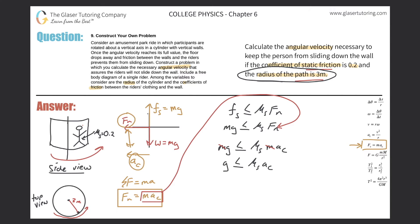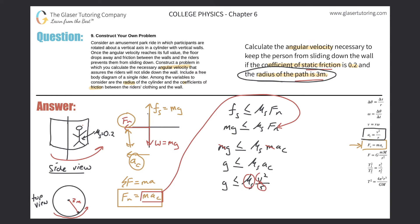I know the relationship: centripetal acceleration equals v²/r, where r is the radius. So now I substitute v²/r for the centripetal acceleration: g ≤ μs × (v²/r). Note that v here is tangential velocity — do not confuse it with angular velocity. I've finally got radius into my calculation, but I don't want tangential velocity; the problem asks for angular velocity.